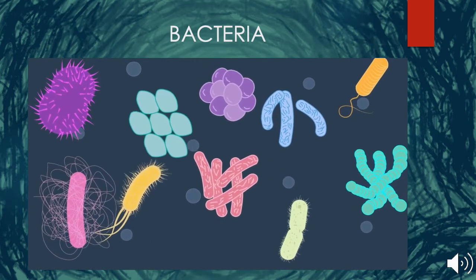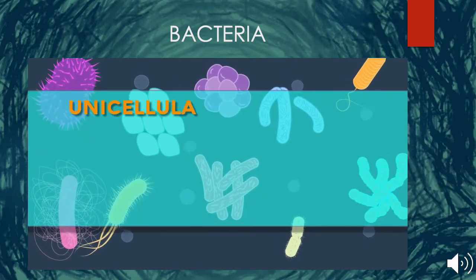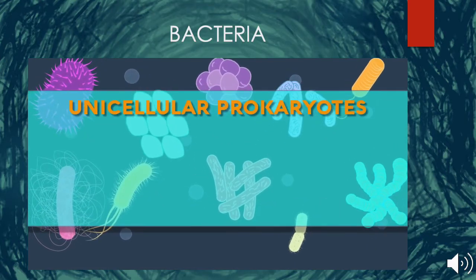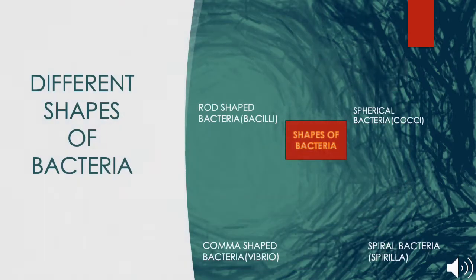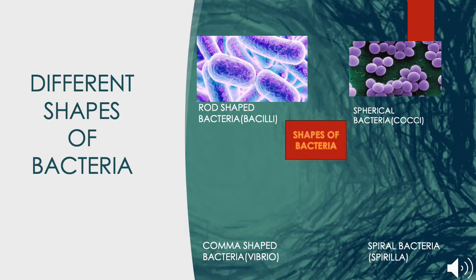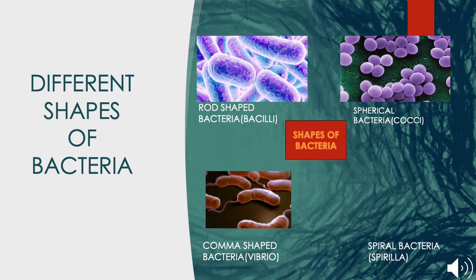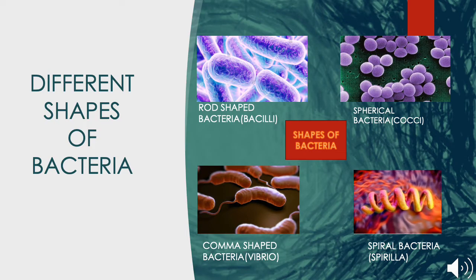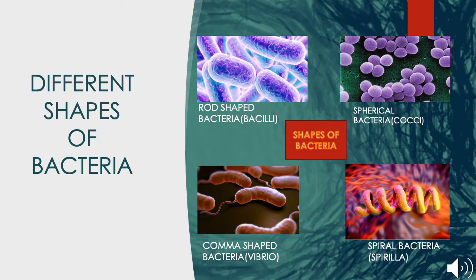Bacteria come in a number of different sizes and shapes. The singular is bacterium. They are the most commonly found unicellular microorganisms, also known as unicellular prokaryotes. Bacteria may be rod-shaped, known as bacilli; spherical, known as cocci; comma-shaped, known as vibrio; or spiral, known as spirilla. A few examples of bacteria are Lactobacillus, Escherichia coli, Vibrio cholerae, etc.